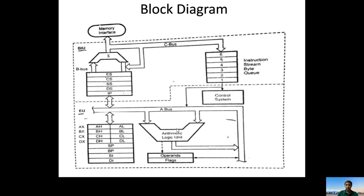ALU stands for Arithmetic and Logical Unit. For example, if the given instruction is an addition operation, the ALU performs the addition and we get the result. That result is sent to the buses. The 8086 has three buses: the address bus, the data bus, and the control bus. The address bus handles selection of addresses, the data bus handles accessing of data, and the control bus decides whether the processor reads or writes data and from which memory or I/O device.